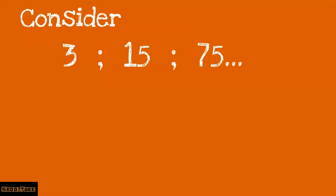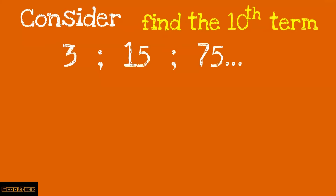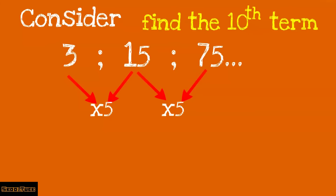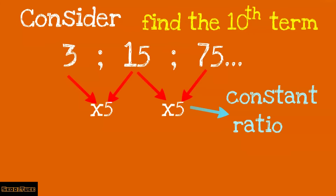Let us consider the sequence 3, 15, 75 and find the 10th term. The constant ratio is 5, since 3 times 5 is 15, and 15 times 5 is 75. Or you can say 15 over 3 is 5, and 75 over 15 is 5, using T2 over T1 equals T3 over T2. So 5 is the constant ratio.